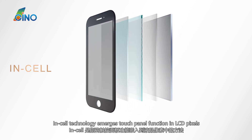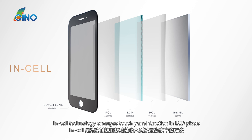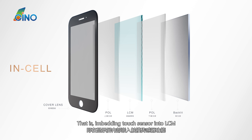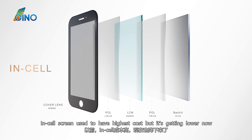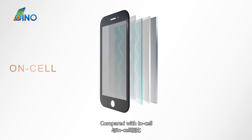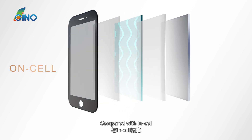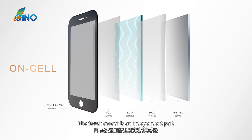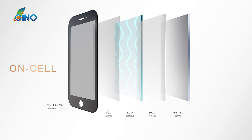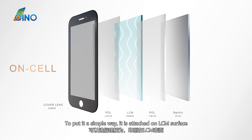In-cell technology merges touch panel function in LCD pixels — that is, embedding the touch sensor into the LCM. Thus, in-cell screens are thinner. In-cell screens used to have the highest cost, but it's getting lower now. On-cell has the touch sensor layer built into the LCD structure, and the touch sensor is an independent part attached on the LCM surface.